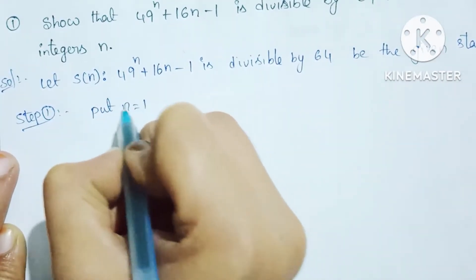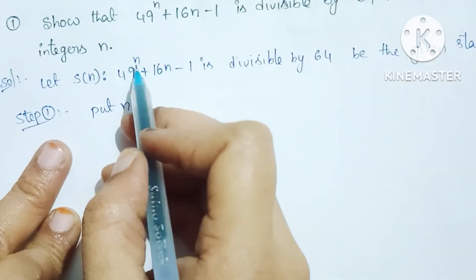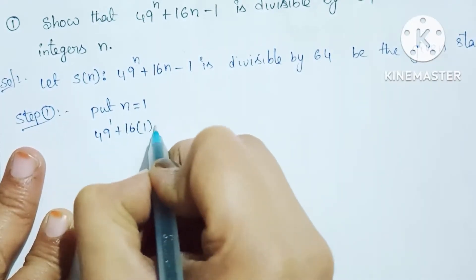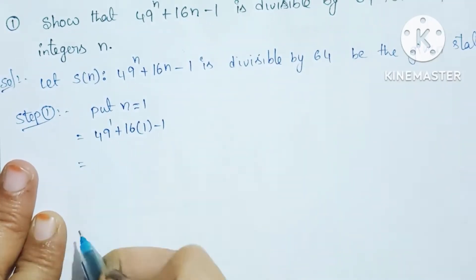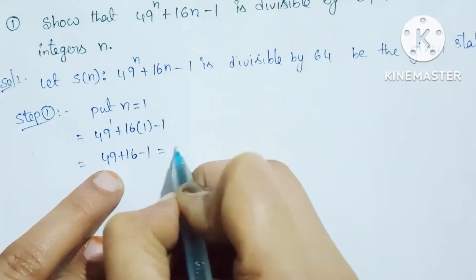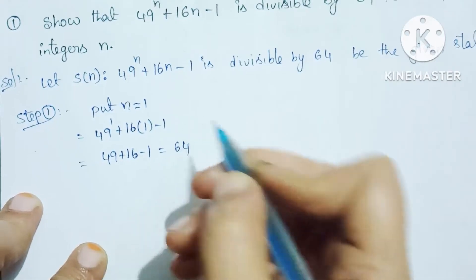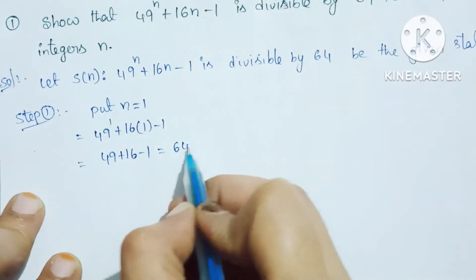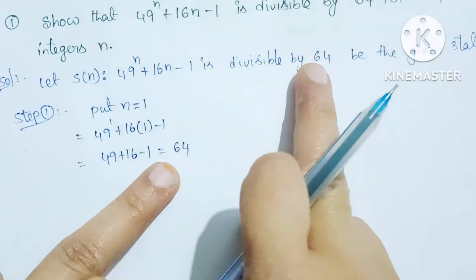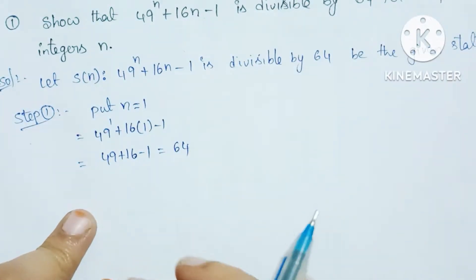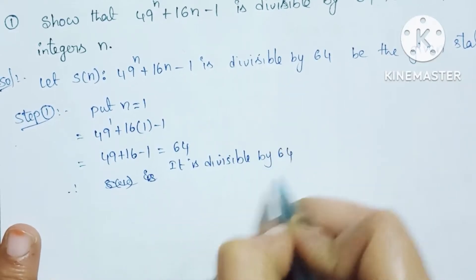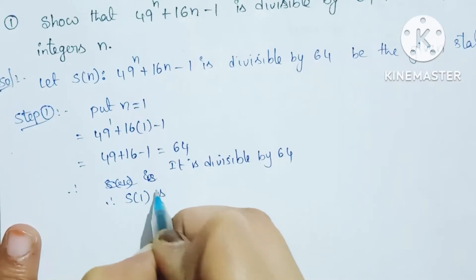Put n equal to 1. Substituting n = 1: 49 power 1 plus 16 into 1 minus 1 equals 49 plus 16 minus 1, which equals 65 minus 1, that is 64. This value is 64, and 64 divided by 64 is exact, so S(1) is true.